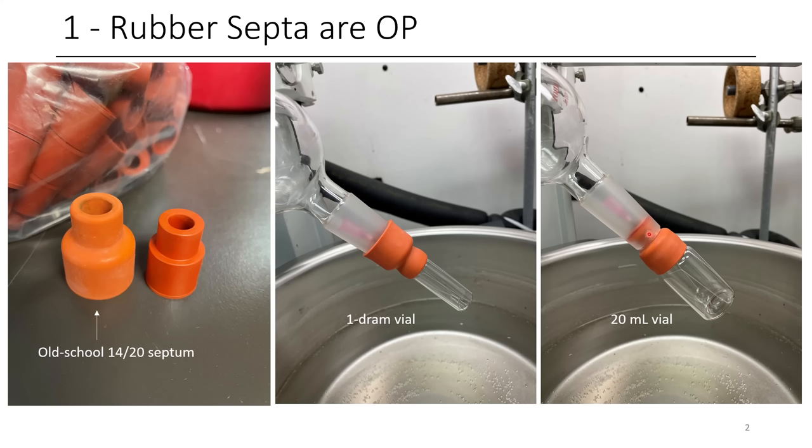However, when you reverse it, the inside 14/20 part is able to slip inside and fit perfectly and snugly inside of the inside of a 24/40. So this is really useful for rotovapping stuff.